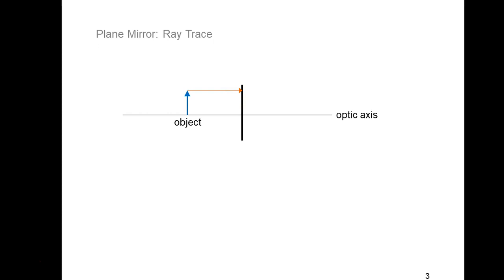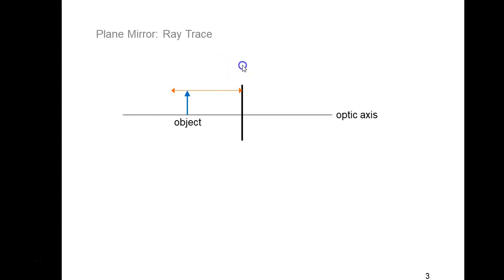To figure out where the image is formed, you have to draw a minimum of two rays, both from the tip of the object arrow. The first ray is drawn parallel to the optic axis from the tip of the object arrow to the optical element. This is a reflecting surface, so by the law of reflection that ray should go right back to the left — the angle of incidence is zero, the surface normal is horizontal, so theta-i equals zero and theta-r equals zero. The ray reflects straight back to the left, past the object.